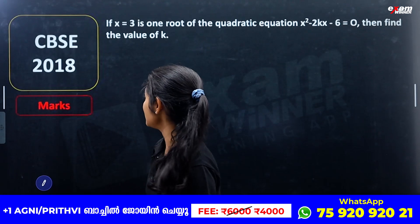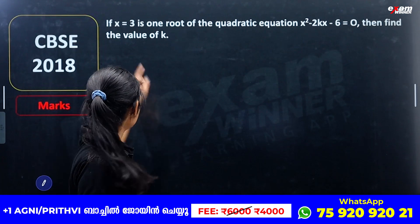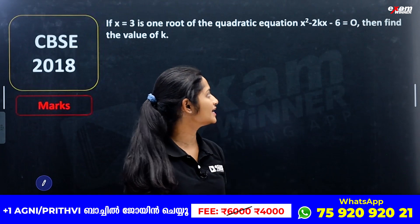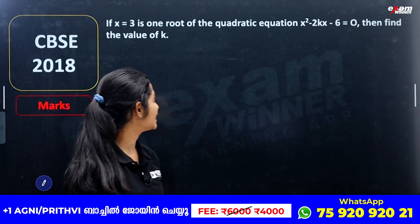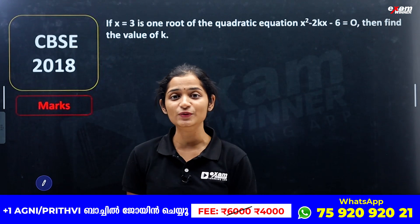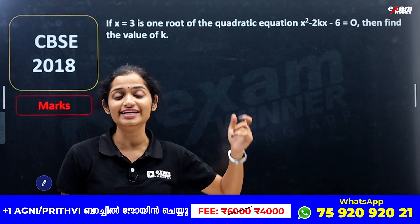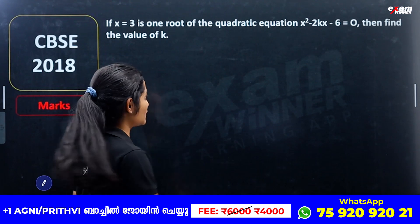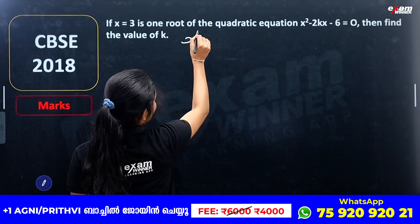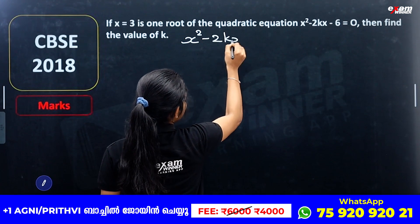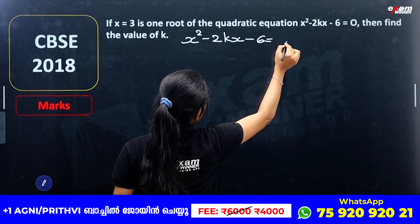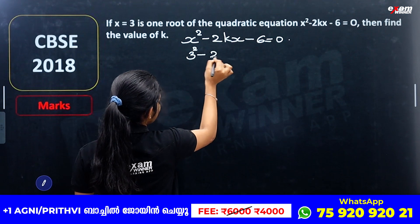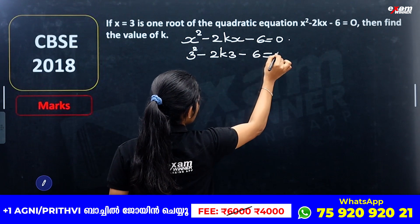Next question from CBC 2018: If x = 3 is one root of the quadratic equation x² - 2kx - 6 = 0, then find the value of k. Since x = 3 is a root, we substitute x = 3 into the equation: 3² - 2k(3) - 6 = 0.